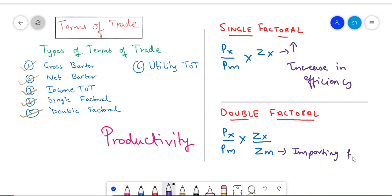Again, the idea remains the same. As a country, you wouldn't want ZM to overpower ZX, or else you would see that as a home country your terms of trade would deteriorate. So, an increase in double factorial terms of trade is favorable.